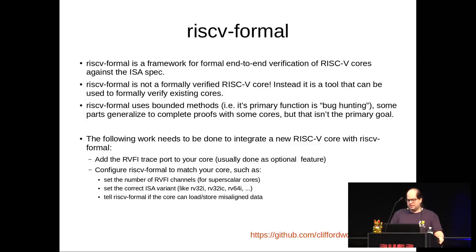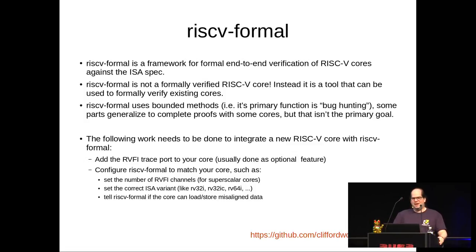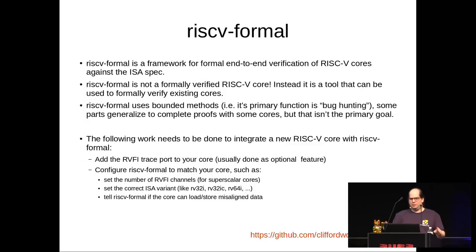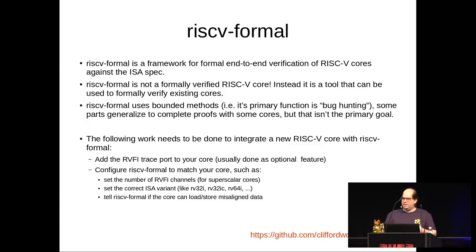There are also other things that are transparent for a user-land process, like whether unaligned loads or stores are supported natively by the hardware. The RISC-V spec only says that when you do an unaligned load or store, a user-based program can expect it to succeed, but it might take a long time because there might be a machine interrupt handler emulating unaligned load/store by doing aligned loads and stores. So the RISC-V Formal framework must be aware of the expected behavior for your core: should it trap on an unaligned load/store, or perform it unaligned?